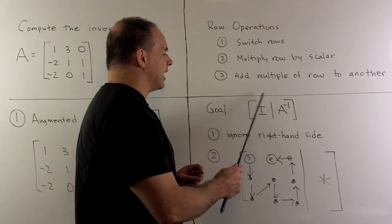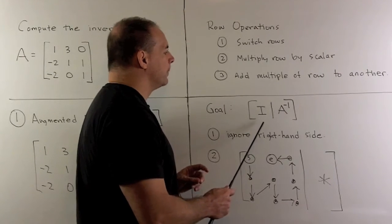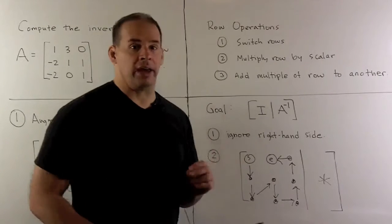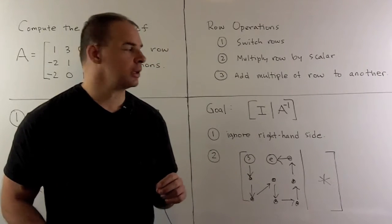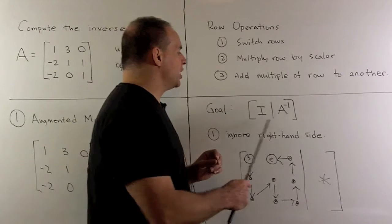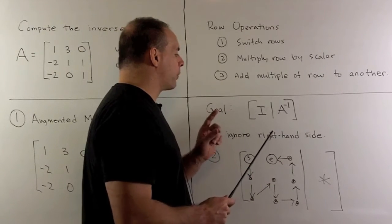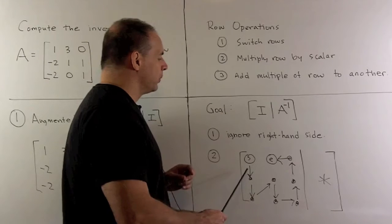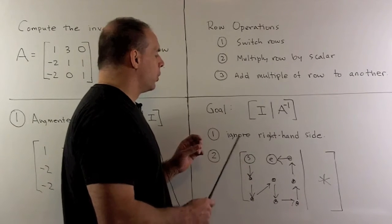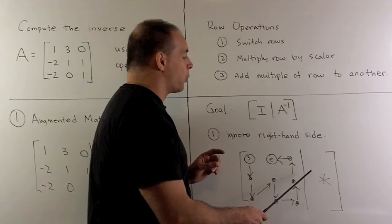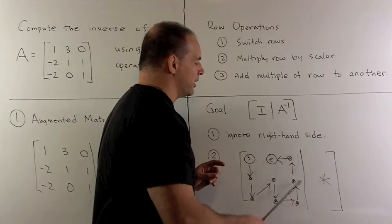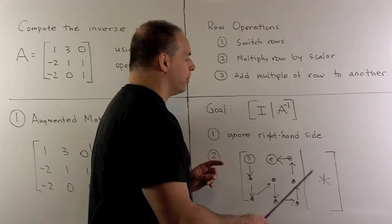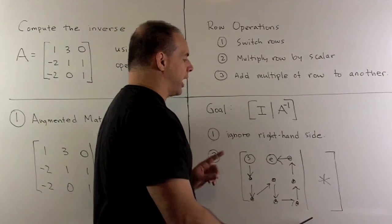So, if I can get an identity matrix in this first slot, in the second slot, we'll have our A inverse. Now, the procedure is going to be, how do I work my way around this part here with the row operations? We're going to ignore the right-hand side. So, we're going to perform the row operations on this side as directed, but this isn't going to guide how we get to our answer.